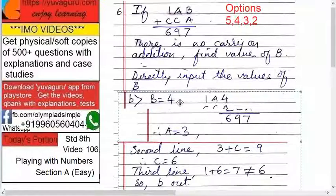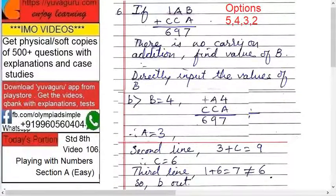Second option, let B equals to 4. Try it. So the problem becomes 1A4 plus CCA equals to 697. So 4 plus A equals to 7, A equals to 3. There is no carry forward.